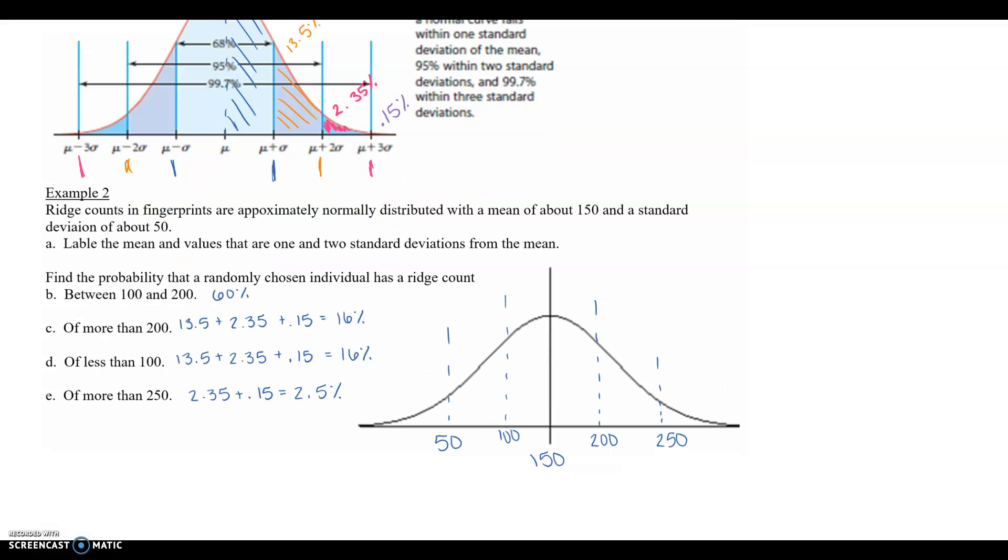All right, so hopefully you labeled your normal distribution: 50, 200, 250, 100, and just 50. So it only asks for one and two standard deviations, but you guys will be asked for three potentially.